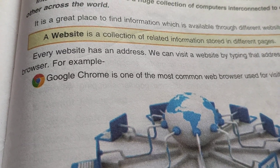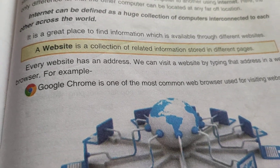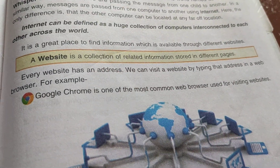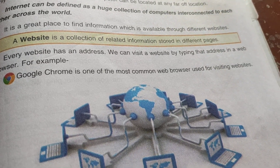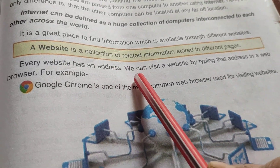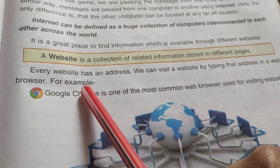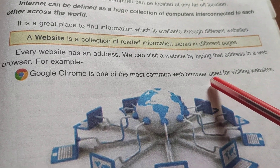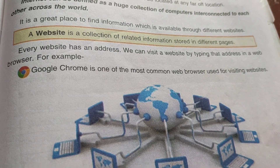A website is a collection of related information stored in different pages. Every website has an address, and we can visit a website by typing that address in a web browser. For example, Google Chrome is one of the most famous web browsers used for visiting websites.